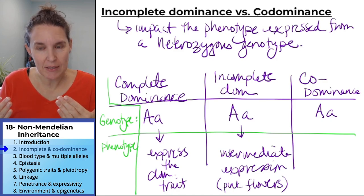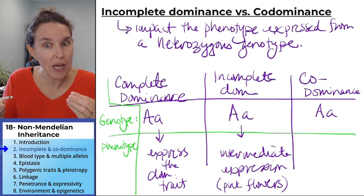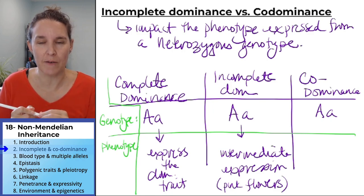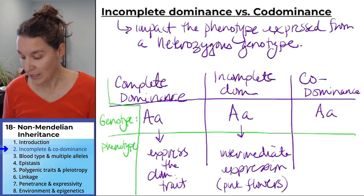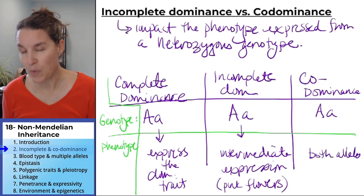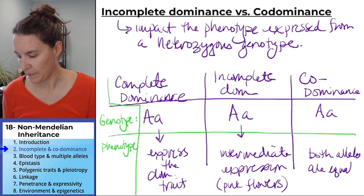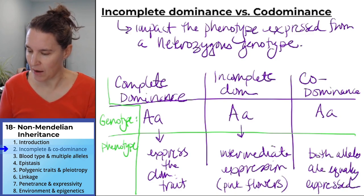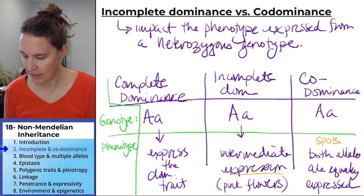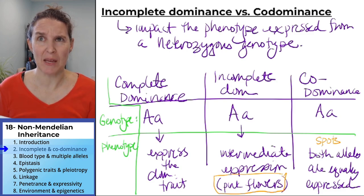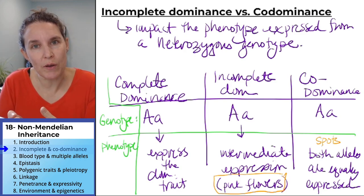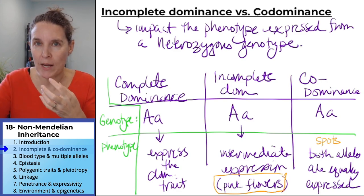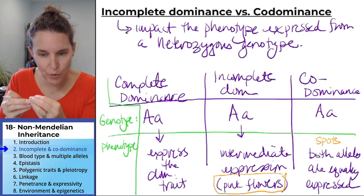In codominance, think about it this way: with incomplete dominance, you're not quite expressing fully — you need two copies to fully express the dominant phenotype. If you only have one, you only get partway there, like pink flowers instead of red ones. With codominance, both alleles and both phenotypes are equally expressed. Whereas white and red mix to make pink as an intermediate, in codominance you have blobs of both — red spots and white spots — a full expression of both alleles.